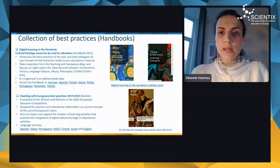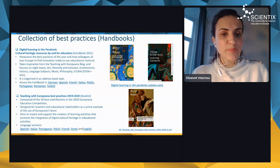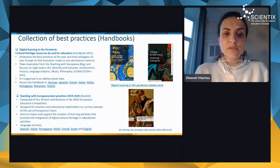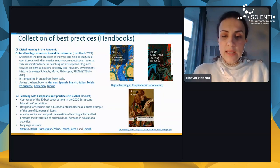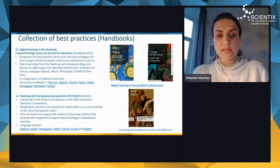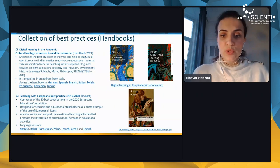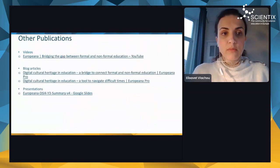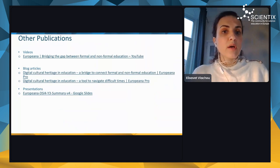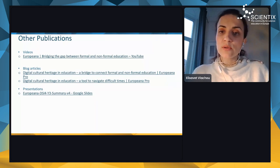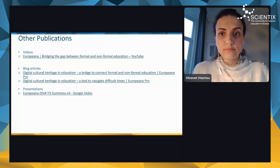This handbook focuses on eight topics: art, diversity and inclusion, environment, history, language subjects, music, philosophy, and STEAM. It is available in different languages including German, Spanish, and French. There is also a booklet called 'Teaching with Europeana Best Practices 2019–2020' with learning scenarios in different languages. Other publications include videos created with Europeana Foundation, blog articles, and illustrated presentations about the project.